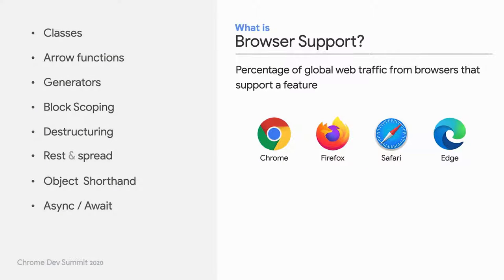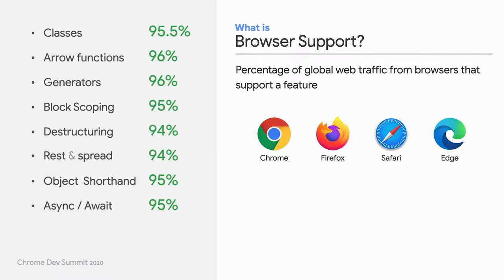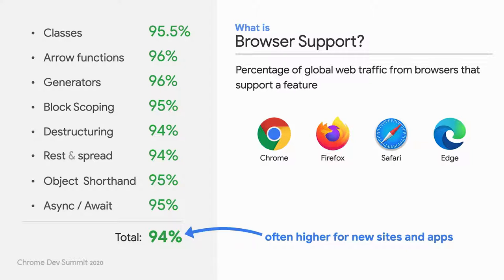Oh really? Not generators? We're using the term browser support quite often, and it's worth clarifying what that means. You can think of browser support as the percentage of global web traffic from browsers that support a given feature. To get a full picture of modern JavaScript browser support, we can take the lowest common denominator of the features we just saw, and we can see that all these features are supported in 94% of browser traffic. Now keep in mind, this is even higher for newer sites and apps. As an example, the total here would be 97% for visitors only from the US.